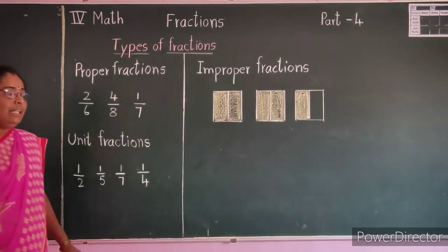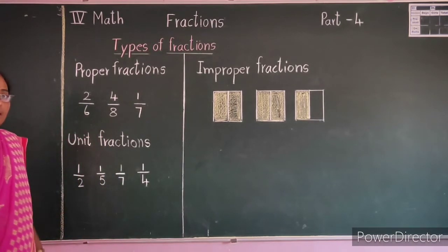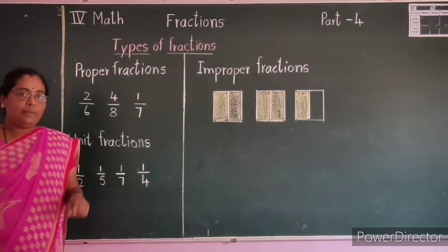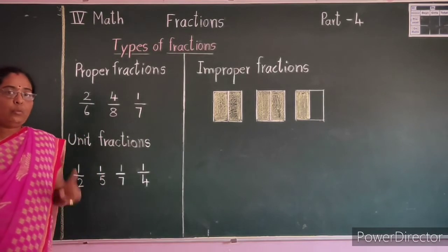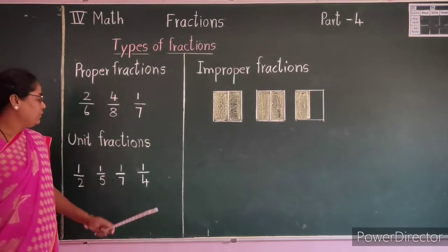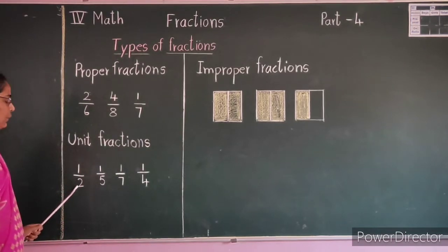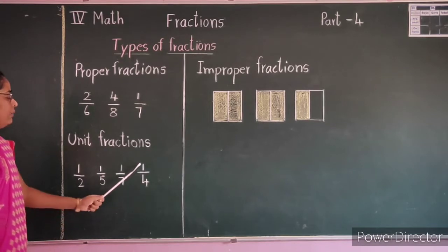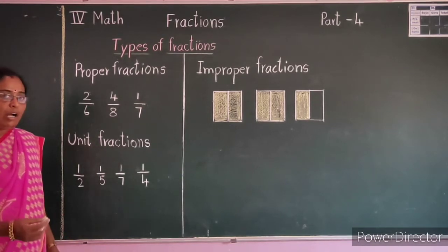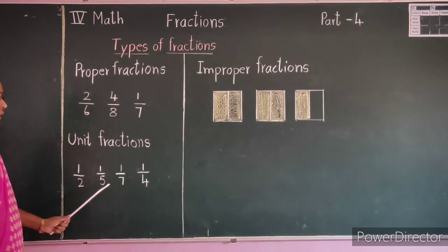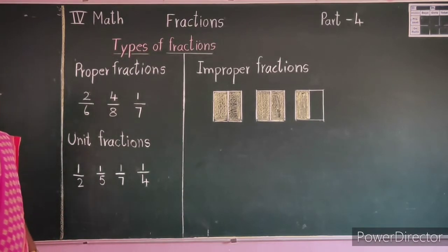Now let's see unit fractions. Proper fractions with numerator 1 are called unit fractions. For example: 1 by 2, 1 by 5, 1 by 7, 1 by 4. In all these fractions, numerators are 1 and denominators are greater than the numerator.